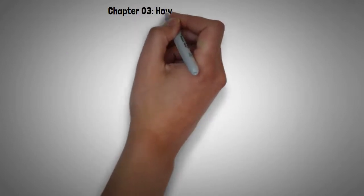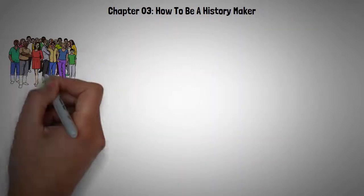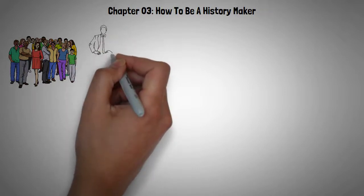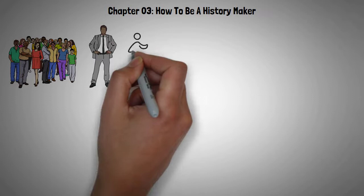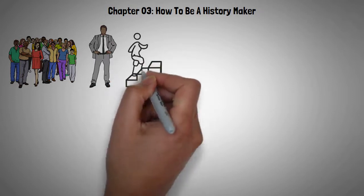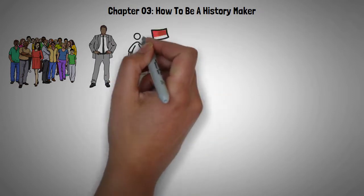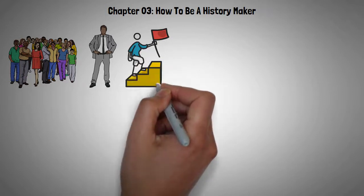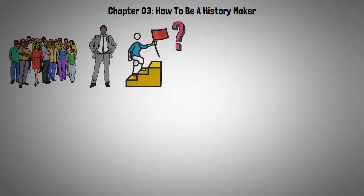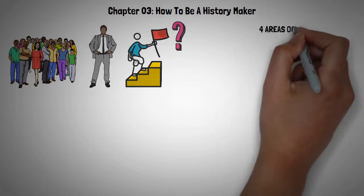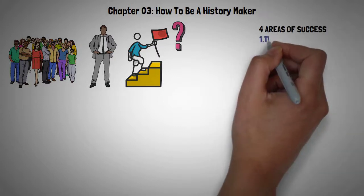Chapter 3: How to Be a History Maker. There are people who accomplish things, and then there are people who make history and become household names. The latter category is comprised of people who set records, break boundaries, and make successful contributions so significant that they are immortalized through their success. But what's the difference? And what determines the type of success you have? According to our billionaire mentor, a history maker is defined by their four areas of focus.